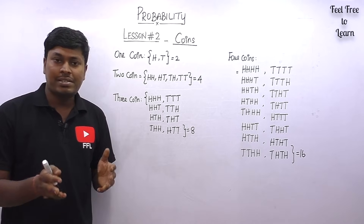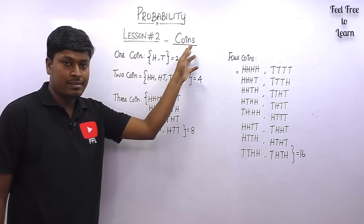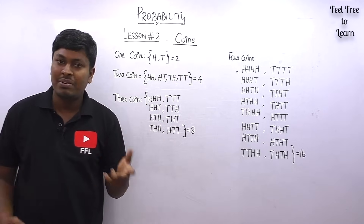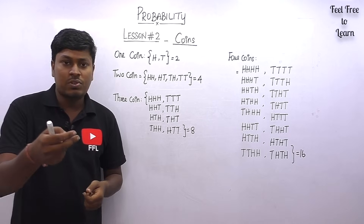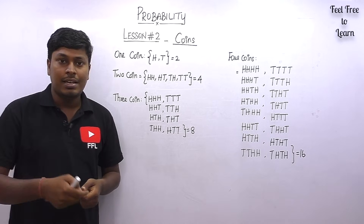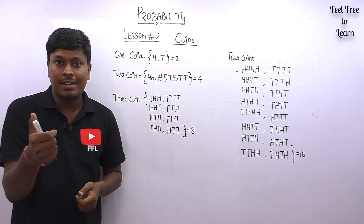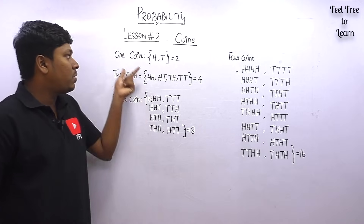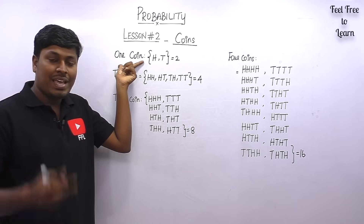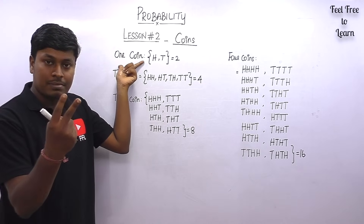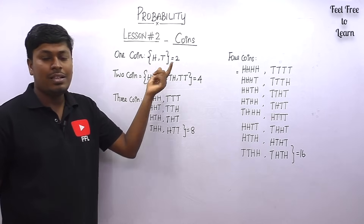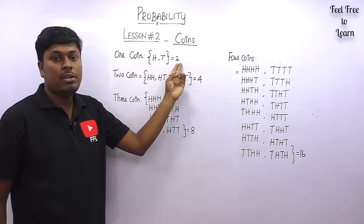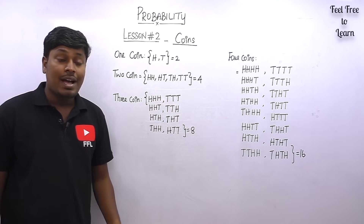The concept based on coins is very simple. When you toss a single coin, there are only two possible outcomes: it can be heads or it can be tails. So if one coin is tossed, the total number of possibilities is two.